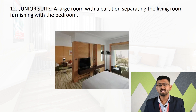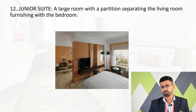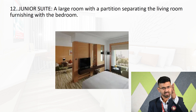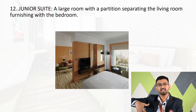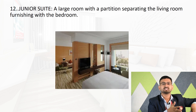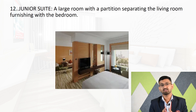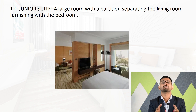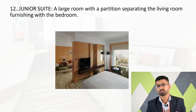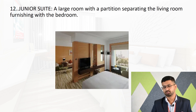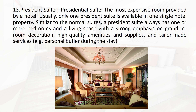Next is the junior suite — a large room with a partition separating the living room furnishings from the bedroom area. There is a common wall with a partition dividing the room: one part serves as the hall area and the other as the sleeping area. The junior suite has a smaller carpet area than the executive suite.